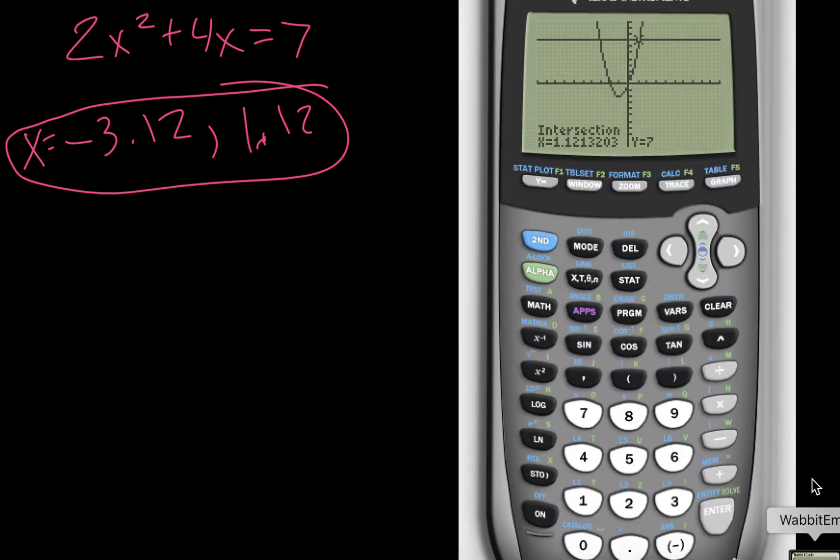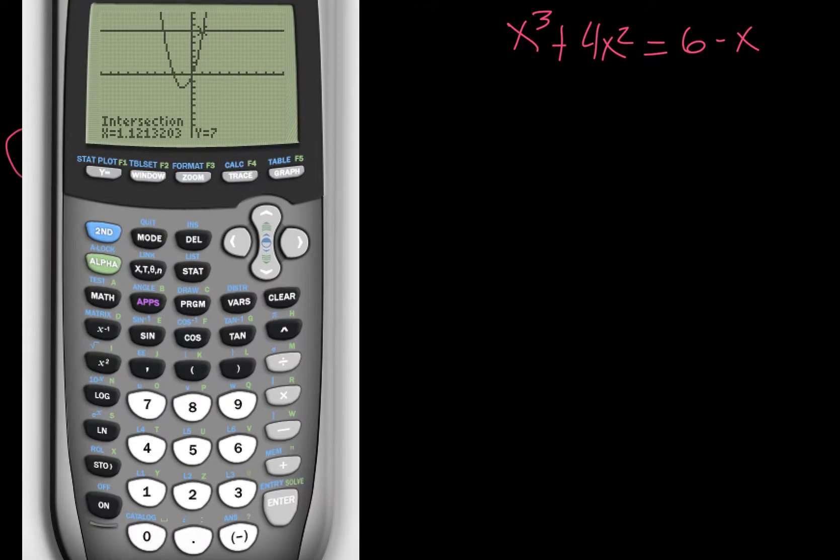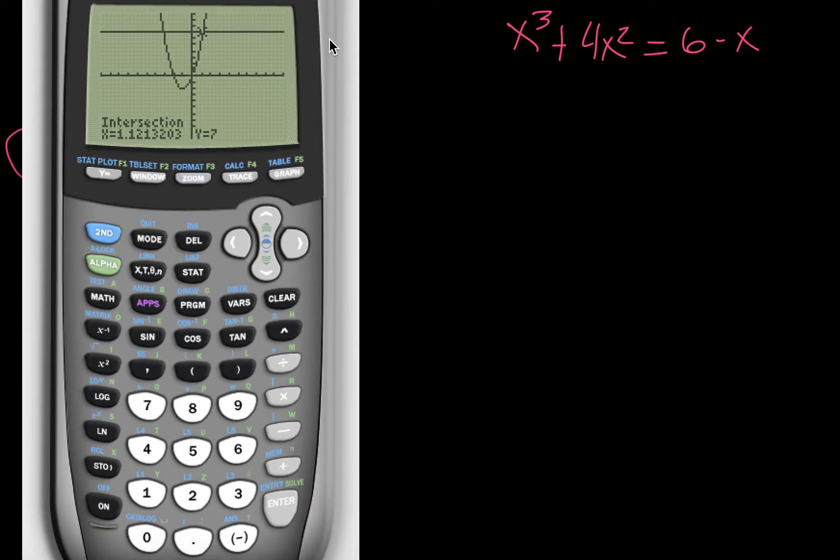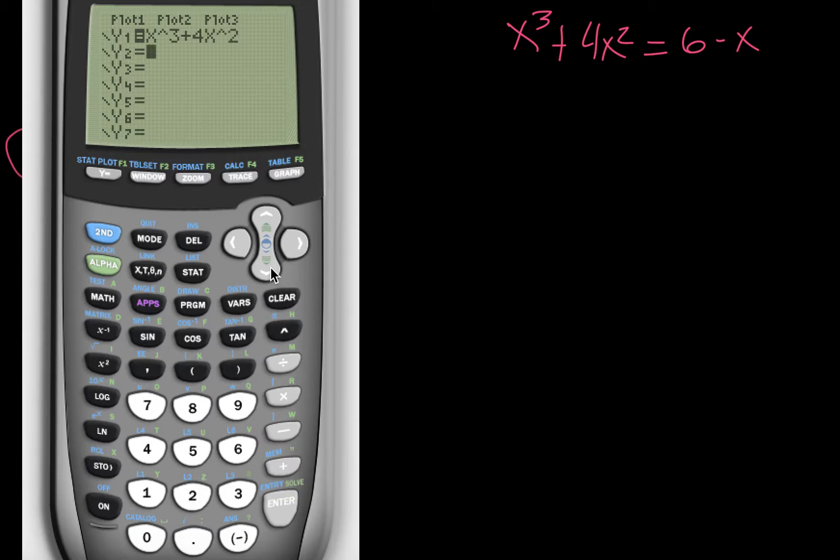Okay, let's move on to this next one, so I'll move this over here now. So we're going to go through the same process. So we want to graph, so we can hit graph, we can hit y equals, clear everything that's on there. And then I'm going to type in the left side, so x raised to the 3 plus 4x raised to the 2. Then I go to the next line and type in the other side of the equation, 6 minus x. Go to graph.